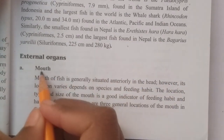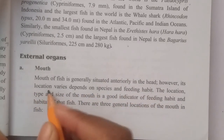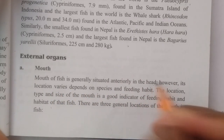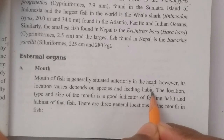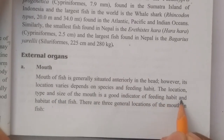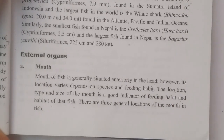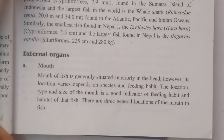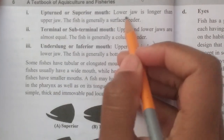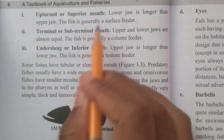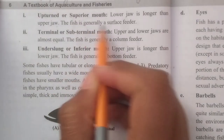The mouth of the fish is generally situated anteriorly in the head. However, its location varies depending on its species and feeding habits. The location, type, and size of the mouth is a good indicator of the feeding habits and habitat of that fish. There are three general locations of the mouth: upturned or superior mouth, where the lower jaw is longer than the upper jaw. Fish with this type of mouth are generally surface feeders.